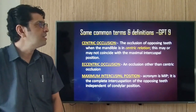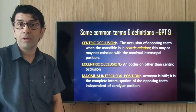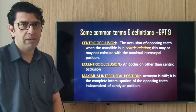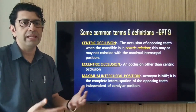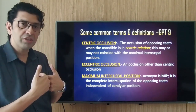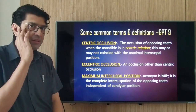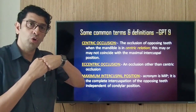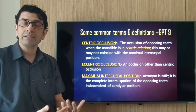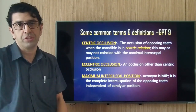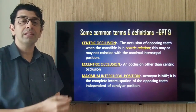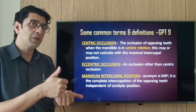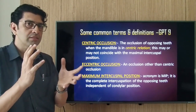Centric occlusion is the occlusion of opposing teeth when the mandible is in centric relation. This may or may not be coincident with the maximum intercuspal position. Maximum intercuspal position (MIP) is the complete intercuspation of opposing teeth, independent of condylar position. The condyle can be in centric relation or not — if the teeth are occluding in maximum intercuspation, that is called MIP. So centric occlusion is developed in centric relation and may not coincide with MIP.